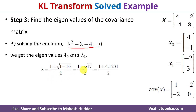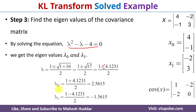Simplifying, we get lambda equals (1 ± 4.1231) / 2. Taking the positive sign: lambda 0 equals (1 + 4.1231) / 2 = 2.5615. Taking the negative sign: lambda 1 equals (1 - 4.1231) / 2 = -1.5615. The eigenvalues are already in decreasing order, so no rearrangement is needed. If they were not in decreasing order we would need to sort them.